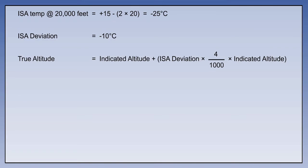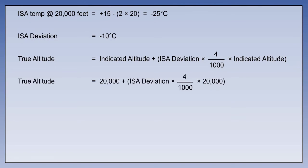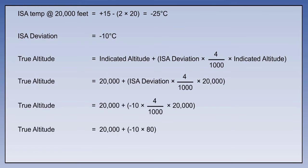We can now substitute into our formula: true altitude equals indicated altitude plus (ISA deviation times 4 feet per thousand feet times the indicated altitude). Our indicated altitude is 20,000 feet and the ISA deviation is minus 10. The part in the brackets comes to minus 10 times 20 lots of 4, that's minus 10 times 80. So that's 20,000 minus 800. The true altitude is 19,200 feet.